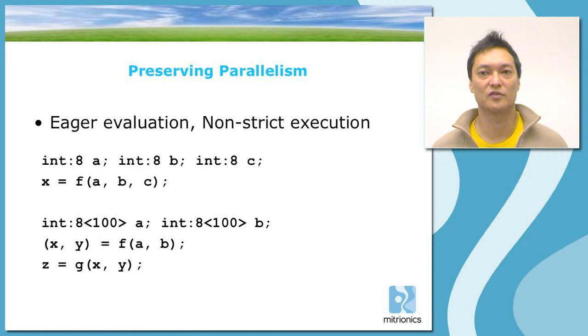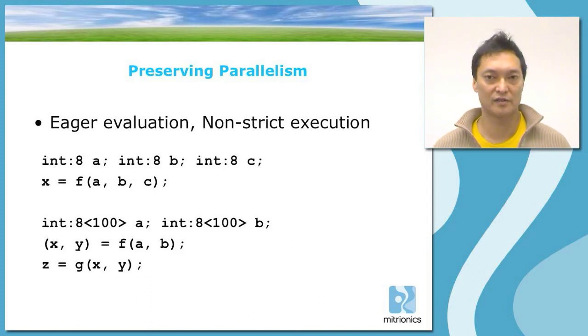One of the main ways in which Mitrion C achieves parallelism is that it is an eager evaluation, non-strict execution programming language. This combination is traditionally quite rare. Usually, non-strict languages will be lazy evaluation languages. However, lazy evaluation is a technique that actually limits parallelism quite a bit. Eager evaluation is much better if you are looking for a parallel computing language.